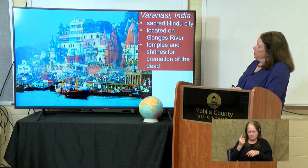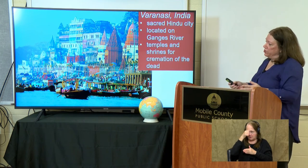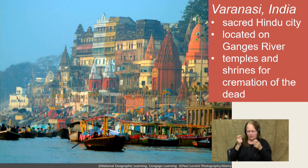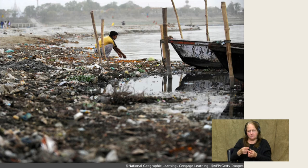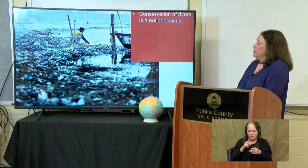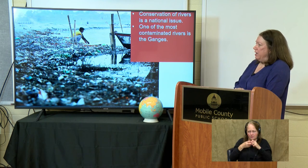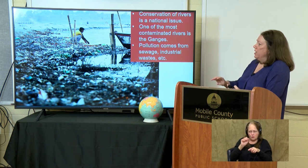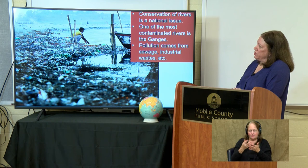These are the Dharavi slums in Mumbai — the most populated slums, covering just under a square mile with 700,000 people. These slums were created around factory jobs in Mumbai — leather, pottery, and textile industry workers came faster than the city could accommodate them, so housing sprang up haphazardly. One city in particular, Varanasi, India, is a sacred Hindu city on the banks of the Ganges River, which is considered holy to Hindus. Yet the pollution on the Ganges is overwhelming — it's one of the most contaminated rivers in the world, from raw sewage and industrial waste.